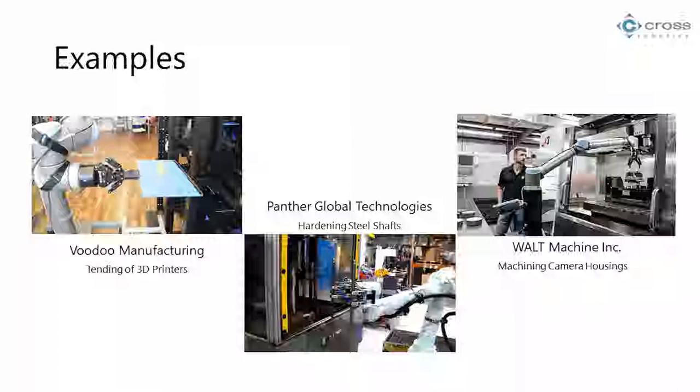Panther Global had a process where they take steel shafts and do a hardening process — putting them into a temperature-controlled bath for surface hardening. The cobot doing this job has a protective suit on because of the heat and chemicals. That job was the one that went to the newest employee — it was that bad. So they automated it, and the biggest benefit was that people weren't being burned out from doing this horrible, dirty, dangerous job all day.